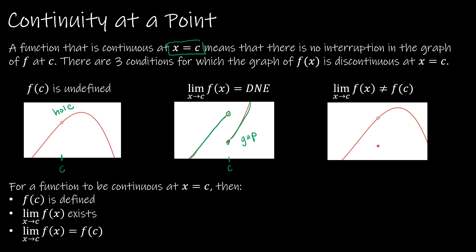The last case is when the limit as x approaches c of f of x does not equal f of c. So if this is c, then this point right here is f of c, but it doesn't fit with the rest of the graph. Even though the limit exists and f of c exists, they don't fall in line with one another — this is also a hole, just like our first example.